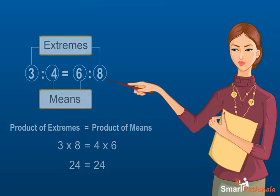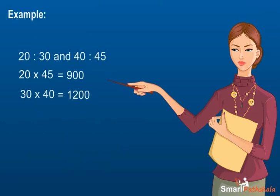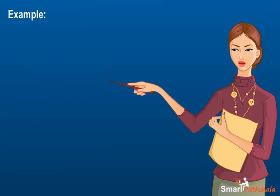Example: Are the ratios 20 is to 30 and 40 is to 45 in proportion? Explanation: The two ratios will be in proportion if the product of means is equal to product of extremes. Here the product of means is not equal to product of extremes, so these ratios are not in proportion.